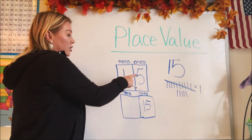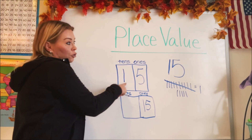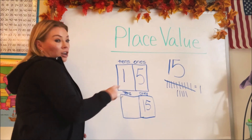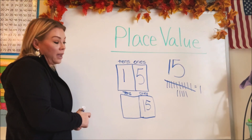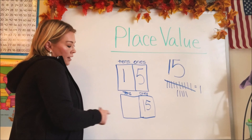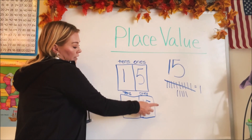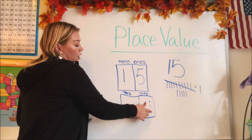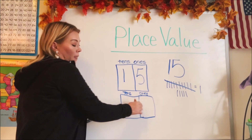And then as soon as you get to 10, you have a group of 10 and you can put one in the tens place. Then the rest are left over in the ones. So we'll never have more than nine in the ones, because once we hit 10, we have a ten and the leftovers will be the ones.